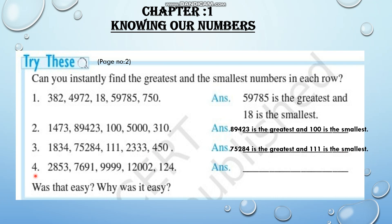The fourth question: 2,853; 7,691; 9,999; 12,002; and 124. Look at these numbers and tell me which is the greatest. 12,002 is the greatest number. And the smallest number is 124. So we can write: 12,002 is the greatest and 124 is the smallest.